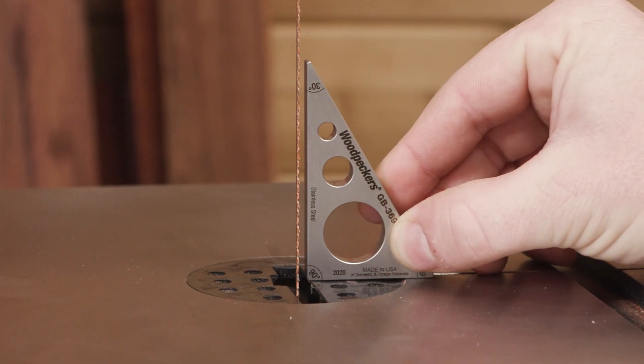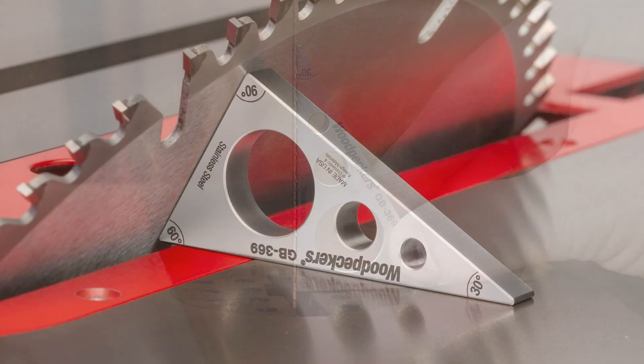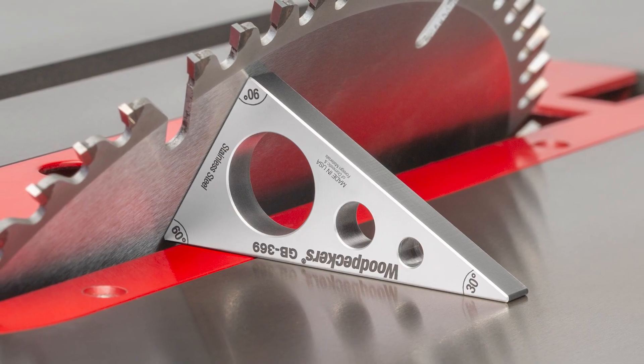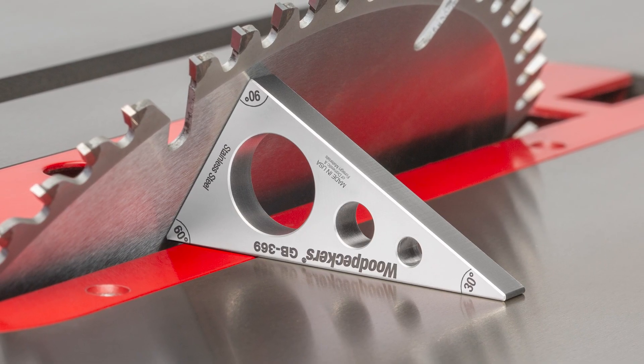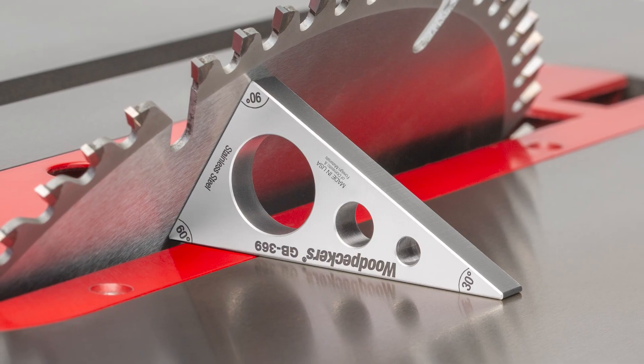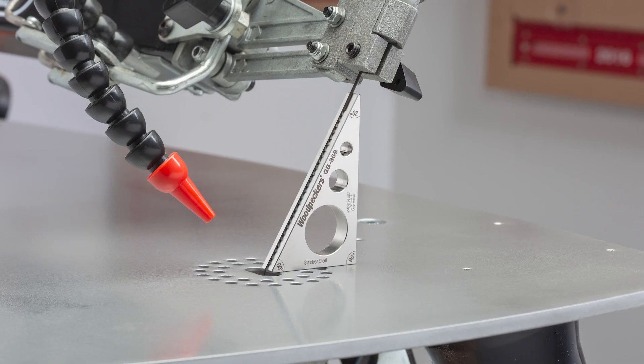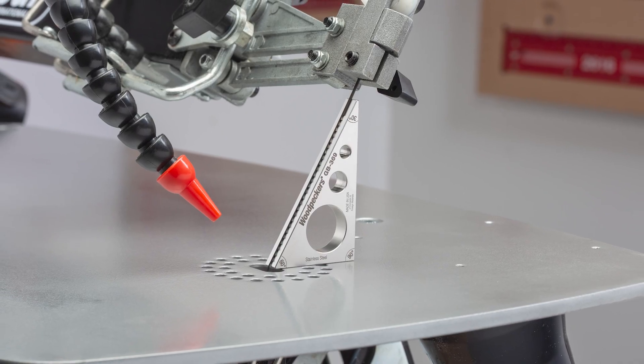With 30, 60, and 90 degree angles, the GB369 measures an inch and five-eighths by two and three-quarter. The long leg is a half inch longer than the GB225, so better reference is provided when setting your bandsaw or scroll saw.